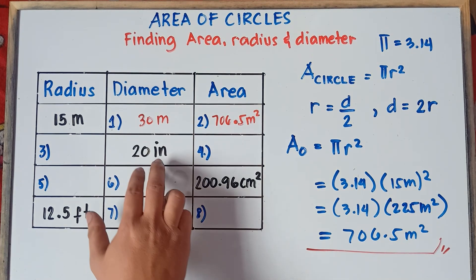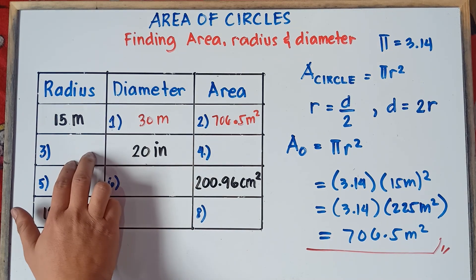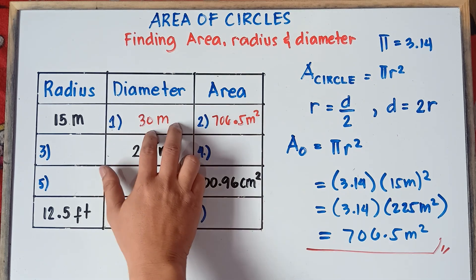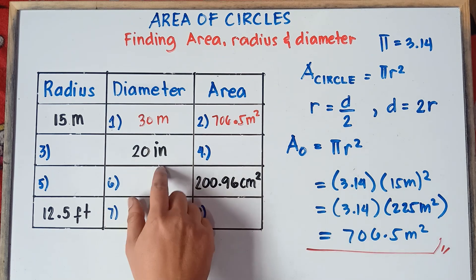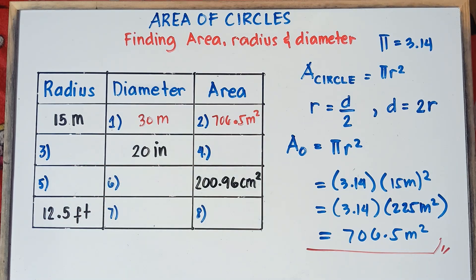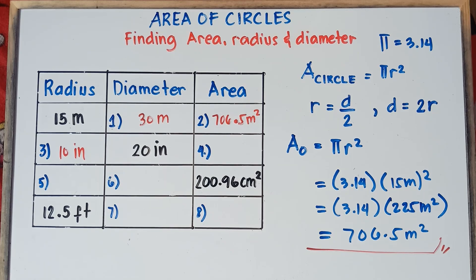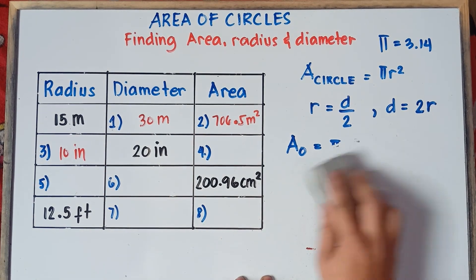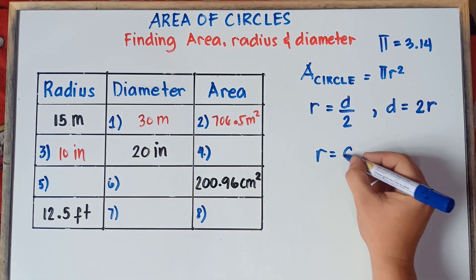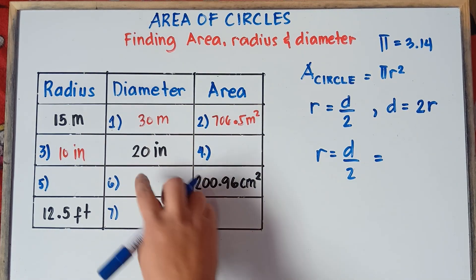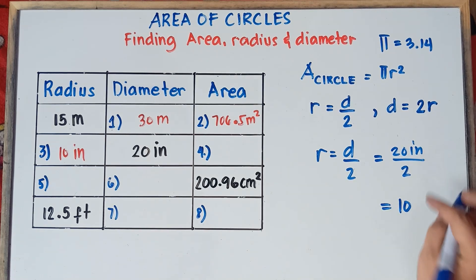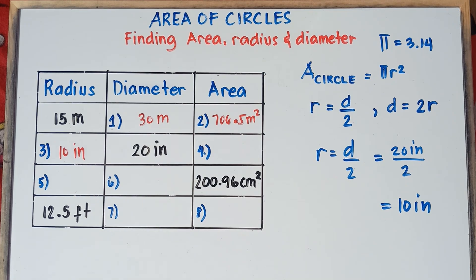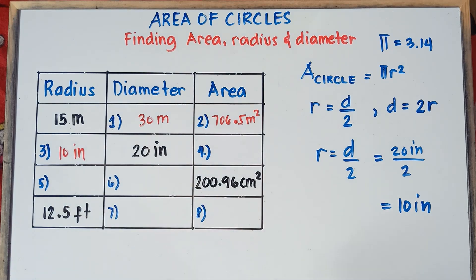Now we have a given diameter of 20 inches. Therefore, our radius is 10 inches, because to get the radius we divide the diameter by 2. Half of the diameter is the radius. So 20 divided by 2 equals 10 inches. The radius equals diameter divided by 2, so the radius is 10 inches.